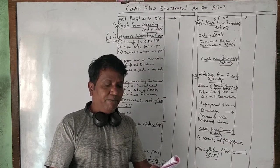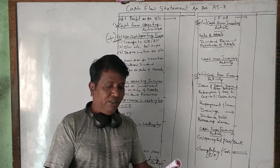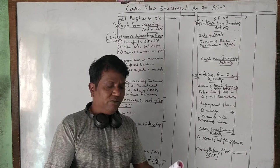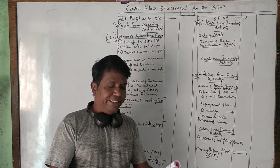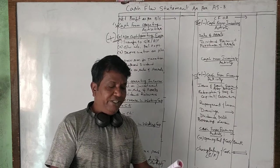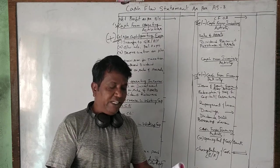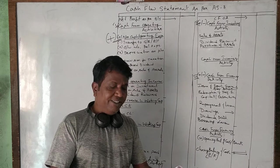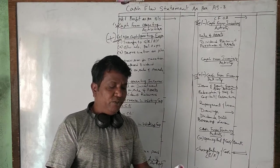Assets of another company purchased were: machinery 5,000, stock 4,000, and goodwill rupees 1,000 — by issue of equity shares. Machinery was further purchased for cash at 1,600. Depreciation on machinery is 2,400. Income tax provided during the year is 7,000. Loss on sale of machinery is rupees 400. We are required to prepare a cash flow statement as per AS-3 indirect method.